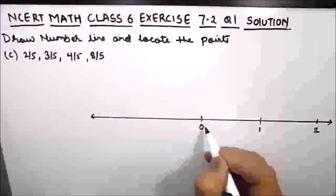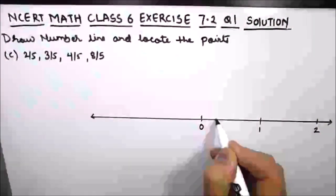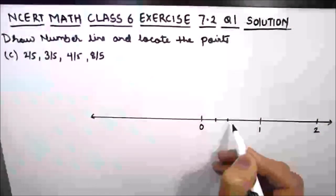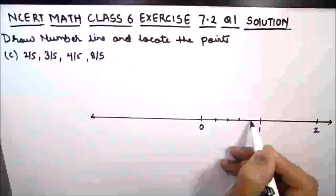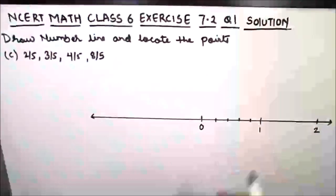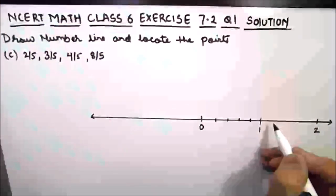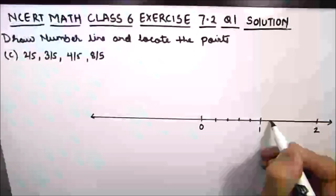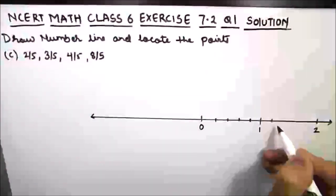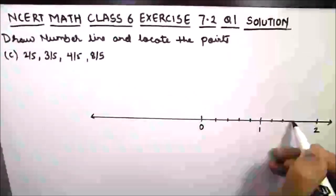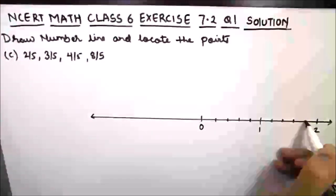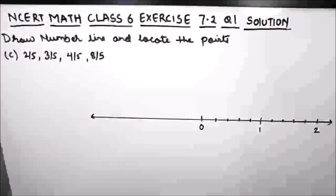Since the denominator is 5, we will break 1 division into 5 subdivisions: 0, 1, 2, 3, 4, 5. Similarly from 1 to 2 we mark 1, 2, 3, 4, 5 subdivisions. Now we will start marking the fractions.